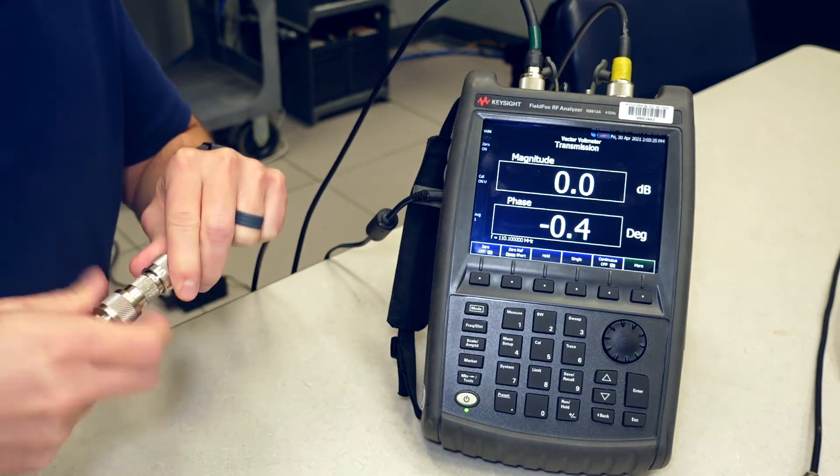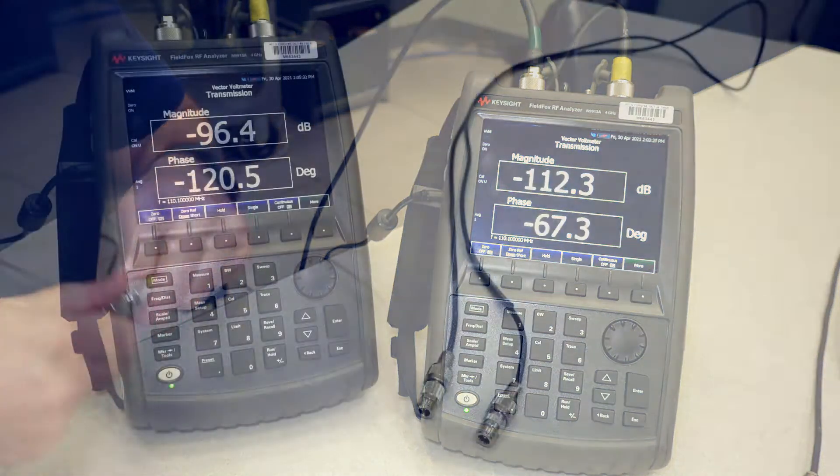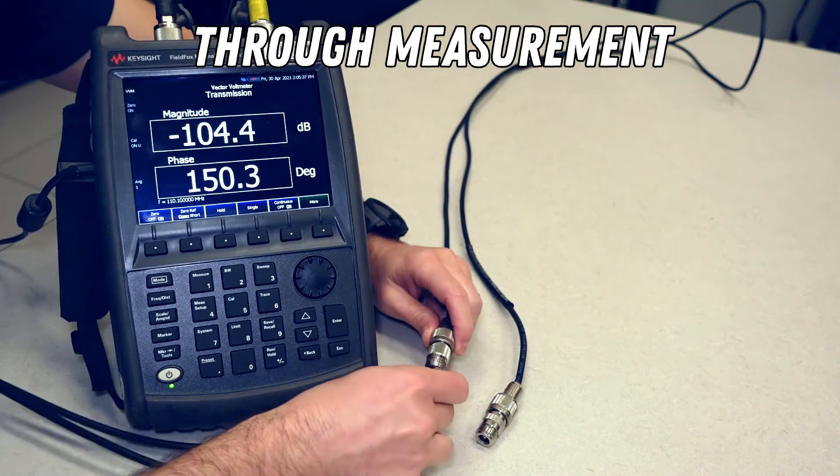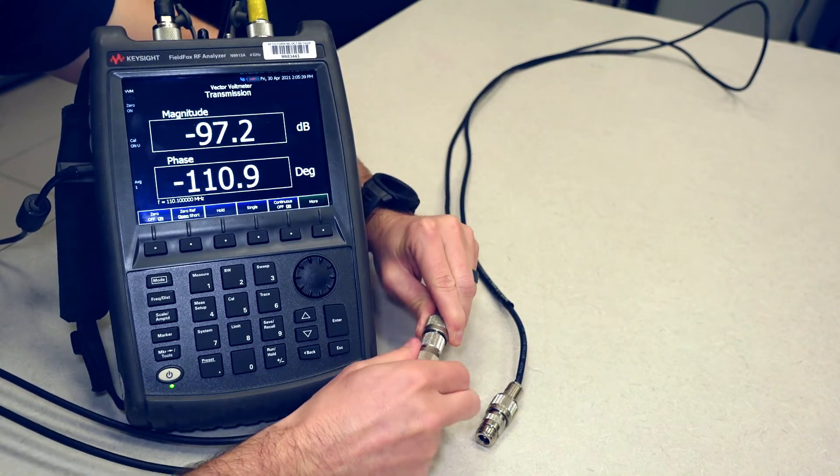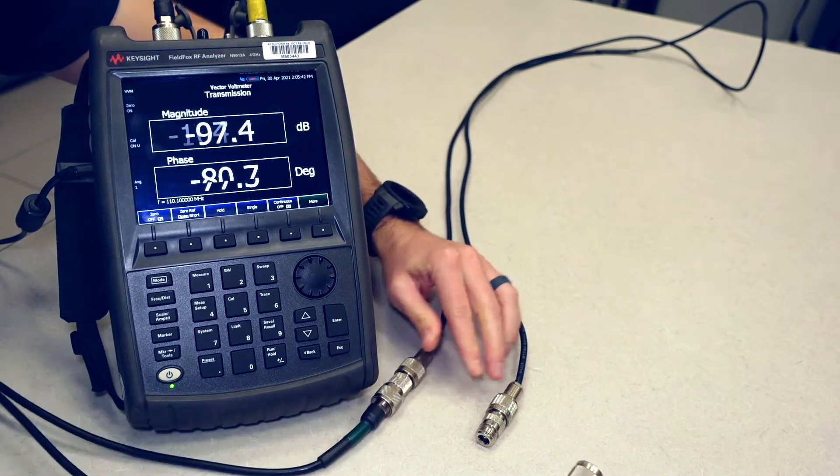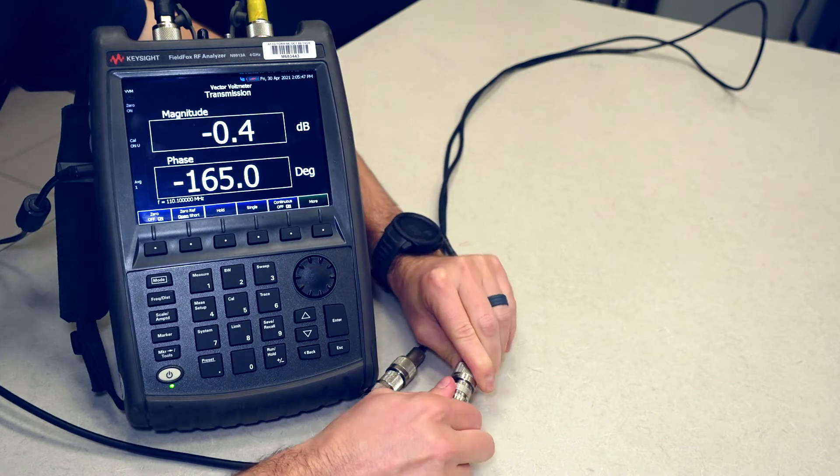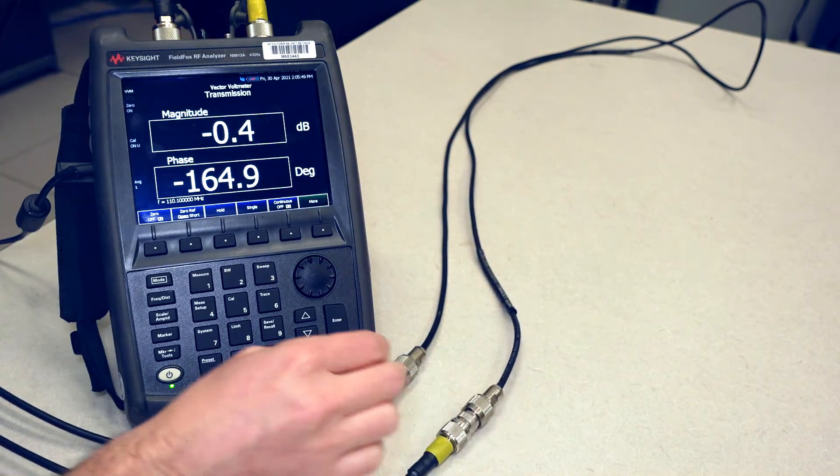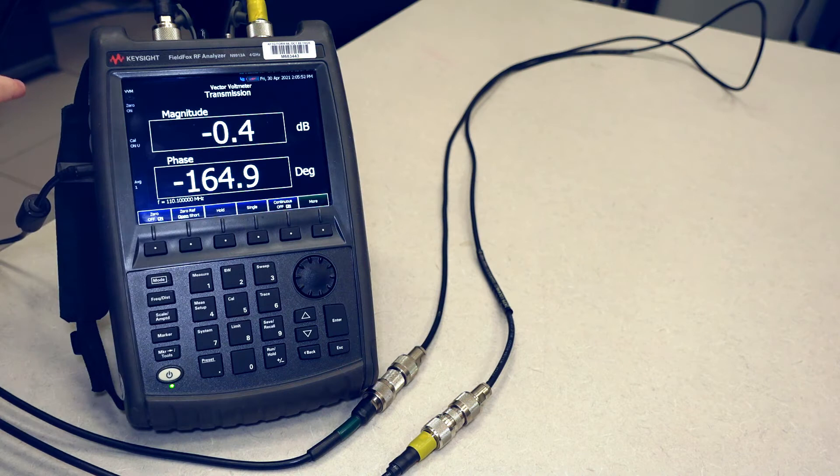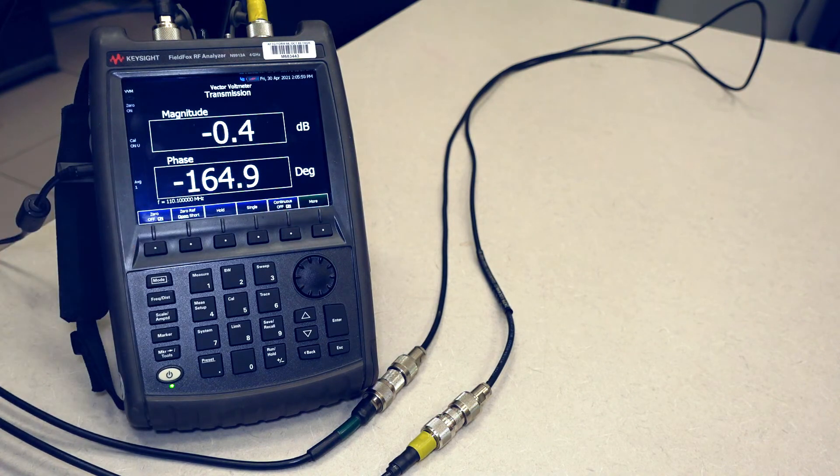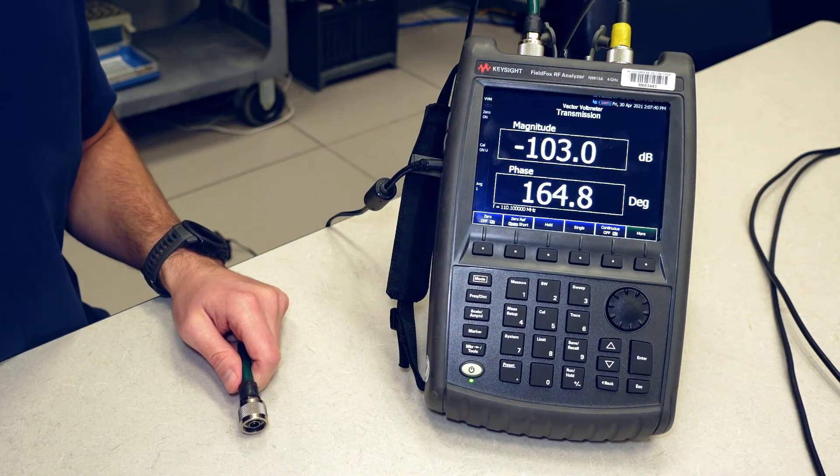Now we can connect to whatever device under test that we want to look through. So for this example of a through type measurement, I've got a test cable here on the table that we're going to connect port one to one side and port two to the other. And the FieldFox is telling us that this little bit of test cable, it's about eight feet long, has a loss of 0.4 dB and we call that an insertion loss. And the correction of the phase is a negative 164.9 degrees.